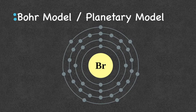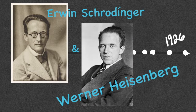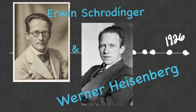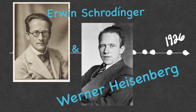Two scientists get credit for the most modern model of the atom. We've got Erwin Schrödinger — you may have heard of him from the Big Bang Theory, Schrödinger's equation, Schrödinger's cat. He was saying electrons can act like energy and they can act like matter — they have this dual property to them.